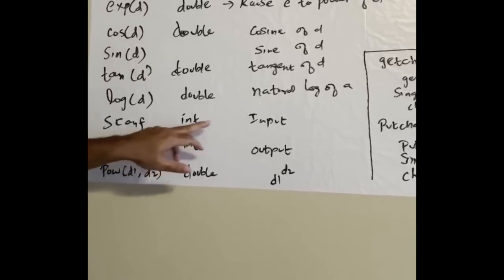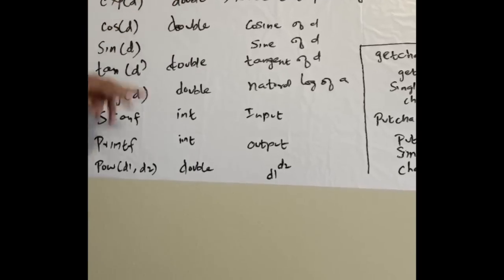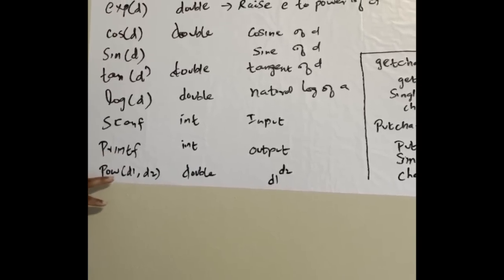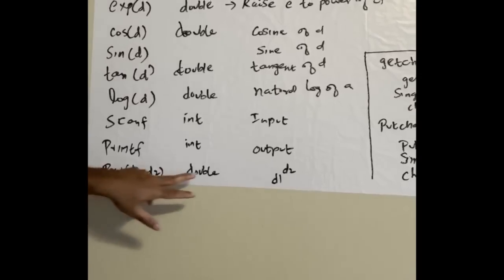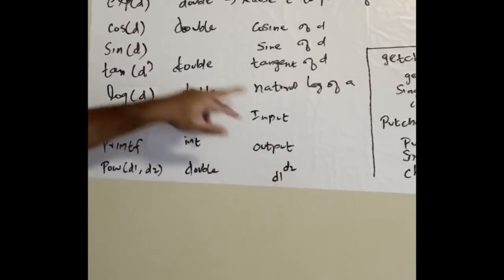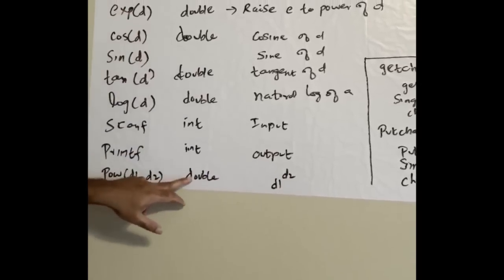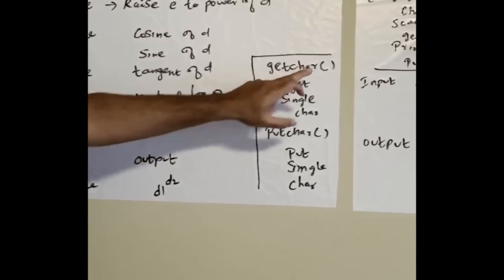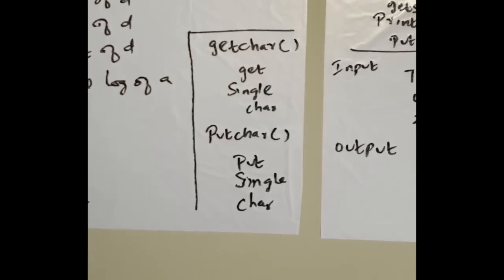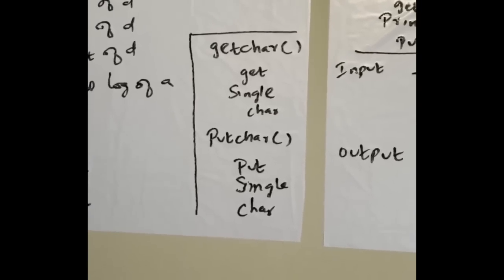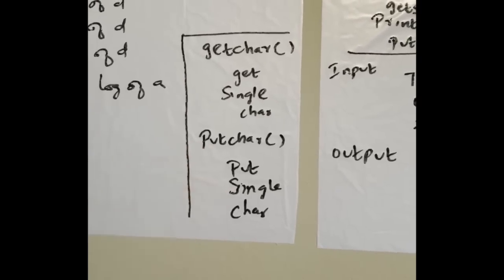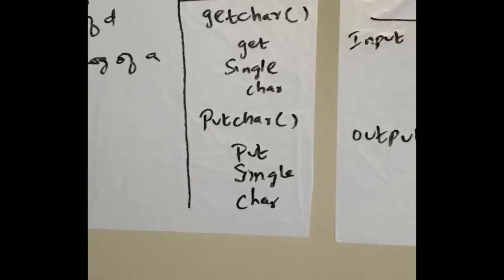These are all common library functions. Printf we use in C programs. Pow(d1, d2) is d1 to the power d2, like the exponent. It returns a double. There are more functions: getchar gets single character from the user keyboard.